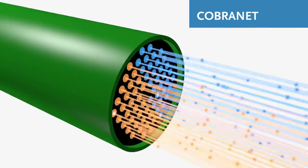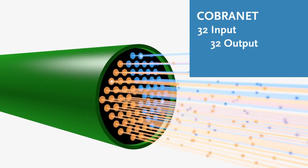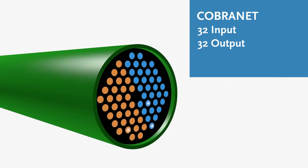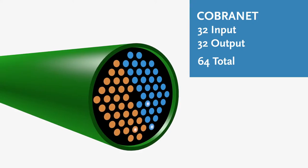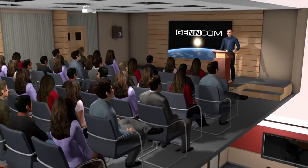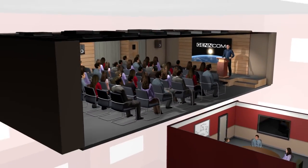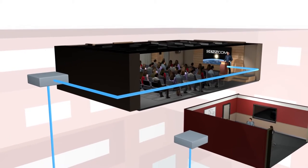CobraNet is designed to handle a maximum of 32 input and 32 output channels for a total of 64 channels. While this is well suited for many applications, larger venues and installations need to carefully consider channel count as well as latency when designing a system.